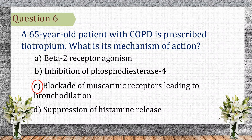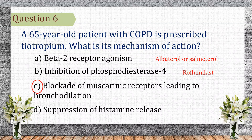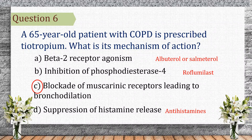Let's see the other choices. Beta-2 receptor agonism describes drugs like albuterol or salmeterol. Inhibition of phosphodiesterase-4 is the mechanism of roflumilast. Suppression of histamine release is how antihistamines work, not tiotropium.